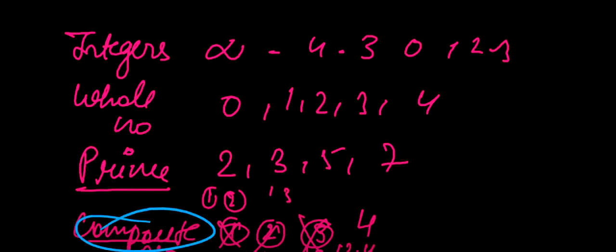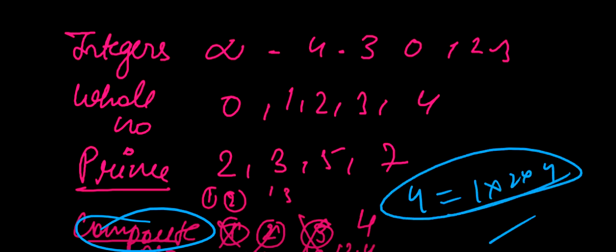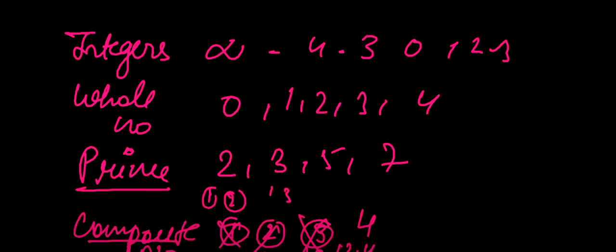A composite number has more than two factors. For example, 4 has factors 1, 2, and 4. We will call composite numbers like 4, like 8 with factors 2 and 4.